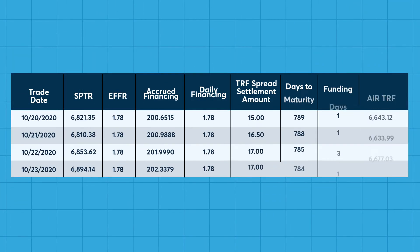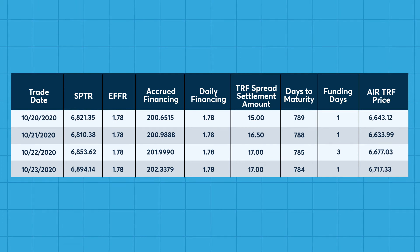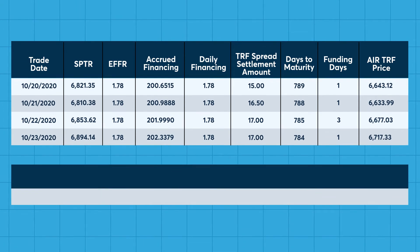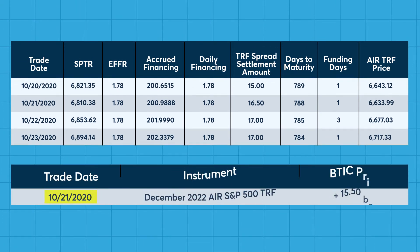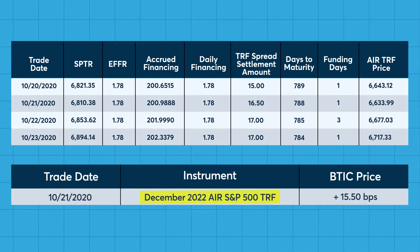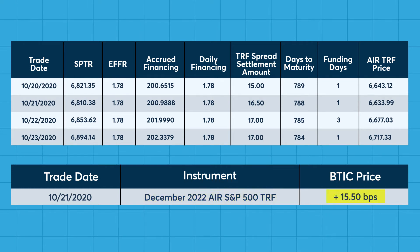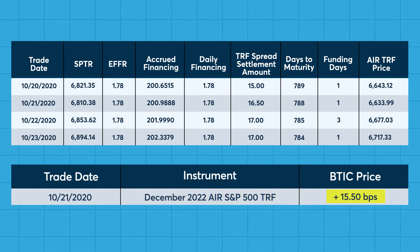Let's review a trade example to better understand the price evolution of the AIR TRF over time. Assume the trade date is October 21, 2020, and a client bought the December 2022 AIR S&P 500 TRF at a BTIC price of 15.5 basis points.